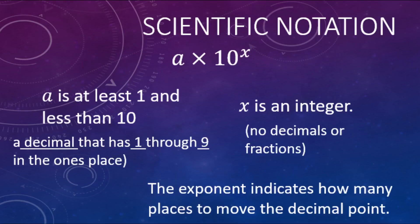Quick recap: scientific notation starts with a number from one through nine, then a decimal point, then the rest of the digits, times 10 to an exponent. The exponent is a whole number — no decimals, no fractions — and tells us how far we're moving the decimal point left or right. Big numbers have a positive exponent; small numbers have a negative exponent with zero-point and a bunch of zeros before the digits. I hope this helps and have a great day!